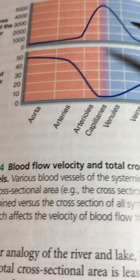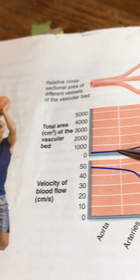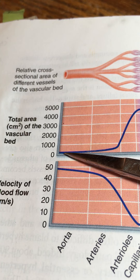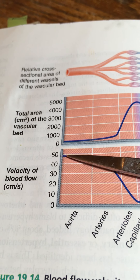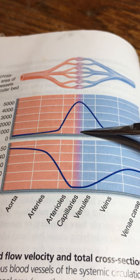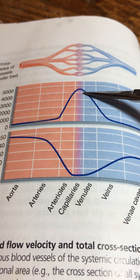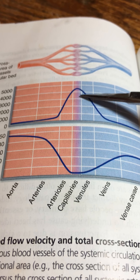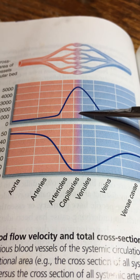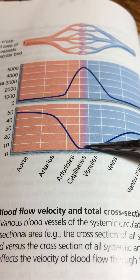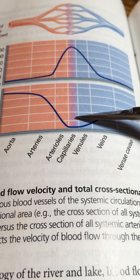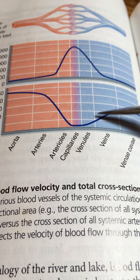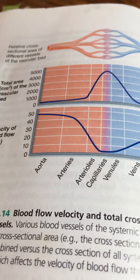Blood flow velocity versus total cross-sectional area: we start with the aorta, which has a very small area. All of the blood begins in the aorta and the velocity is pretty significant at that point. Notice that the total cross-sectional volume really stretches out when we get to the capillaries, where we're visiting 40 to 50 trillion cells. It's like the Delta of the Mississippi River — things slow down quite a bit, and there's a lot of dynamic exchange going on between the blood and the surrounding tissues. Then things pick up again as we move back toward the heart.